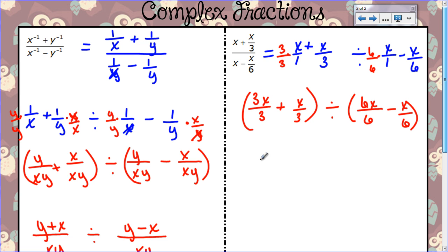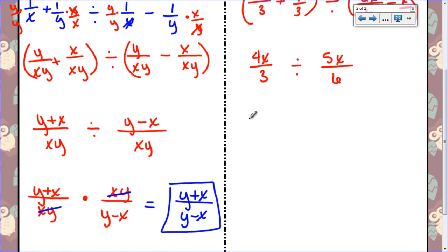And we're going to just add and subtract. So this one, three x plus x gives me four x over three. Six x minus x makes five x over six. So now we go keep change flip, keep this one the same, change, flip this one over.